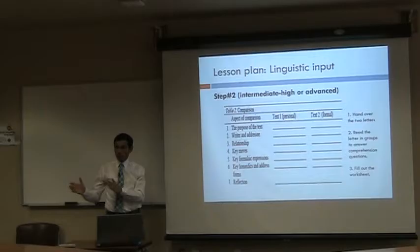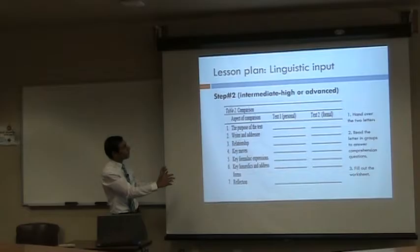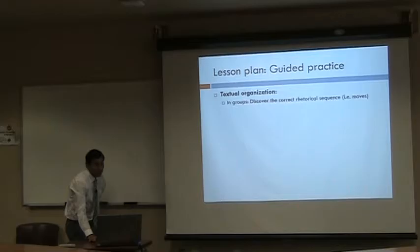For linguistic input, one way to get students into deconstruction is to select two authentic texts from the internet and give them a worksheet asking them to write in Arabic about the purpose of the text, the writer, the intended audience, the social distance and relationship, the key moves, and the honorifics and titles used.